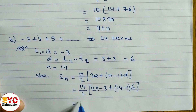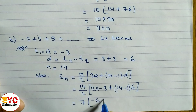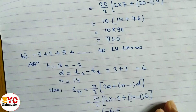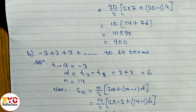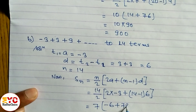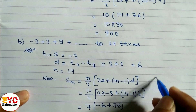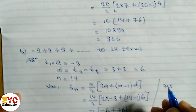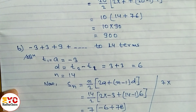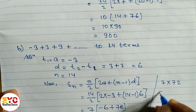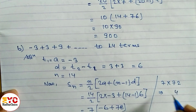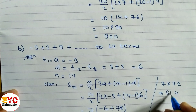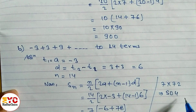Calculating: 14/2 = 7. Then 13 × 6 = 78. Then 2 × (−3) = −6, and −6 + 78 = 72. Finally, 7 × 72 = 504. So the answer is 504.